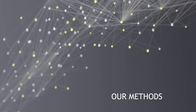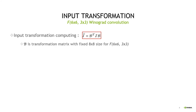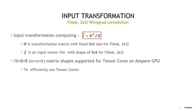Now let's introduce our F6×6, 3×3 Winograd Convolution method. We mainly introduce input transformation here; filter transformation is similar, and output transformation is an inverse process. Please check our paper for more details on those two parts. The equation of input transformation uses B, the input transformation matrix of shape 8×8, and I, the input tensor tile, also of shape 8×8. As Tensor Cores support the 16×8×8 matrix shape on Ampere GPUs, to efficiently use Tensor Cores we converted the input transformation to an equivalent formula.